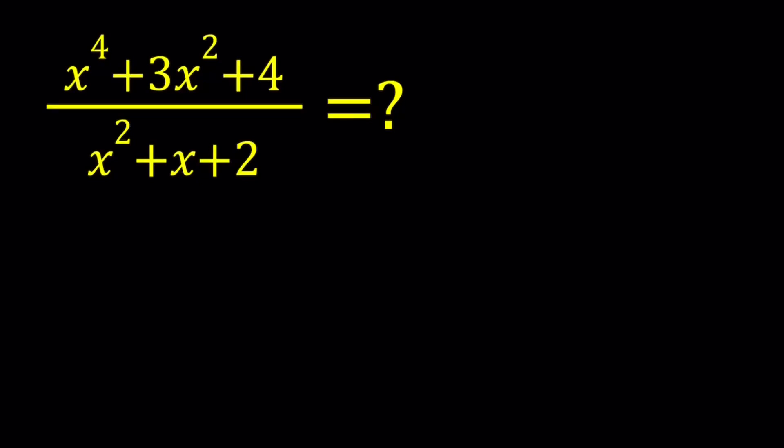Hello everyone. In this video, we're going to be simplifying a rational expression. We have x to the fourth power plus 3x squared plus 4 divided by x squared plus x plus 2, and we're going to simplify this expression.